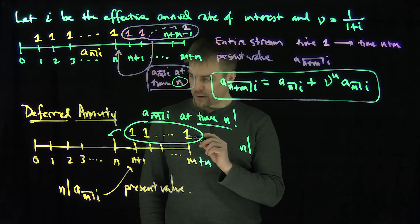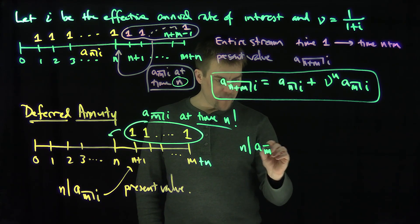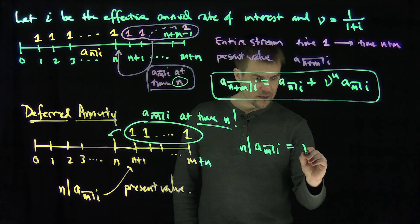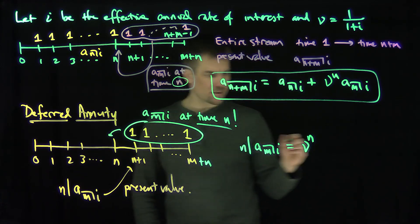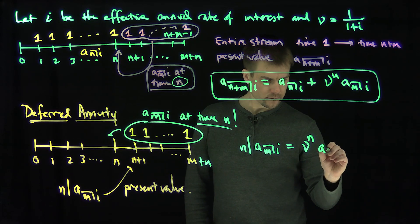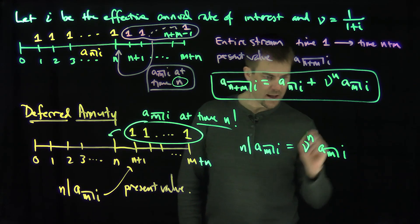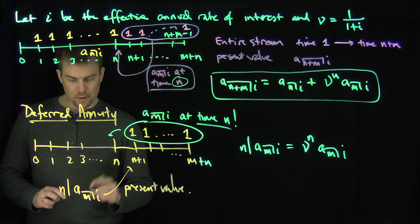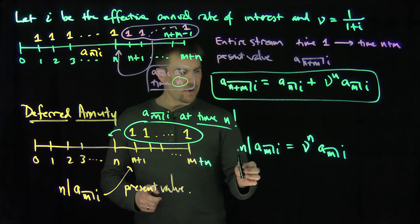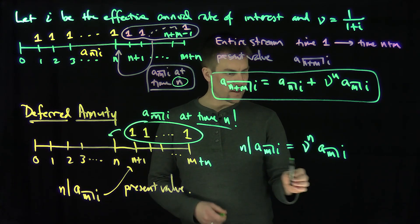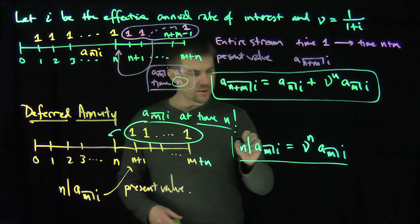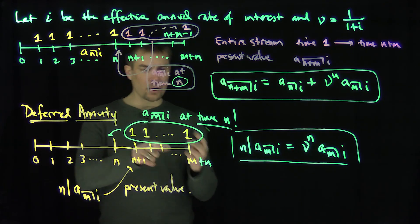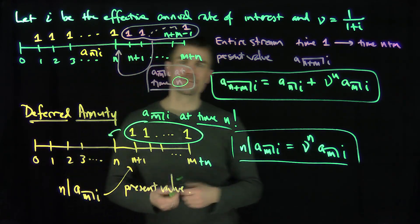We can conclude from this that the deferred annuity, if I defer n years and I get m payments after the n years at effective annuity rate i, will exactly be v to the n times a_m,i. That gives us our formula for a deferred annuity with a payment period of m plus n years in totality. Whenever you see a present value stream in this form, you want to develop notation that's consistent with other notation you see, making sure that everything is brought back to time zero. Thank you very much.